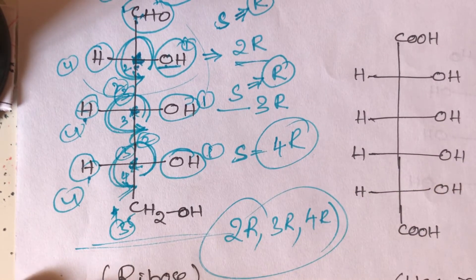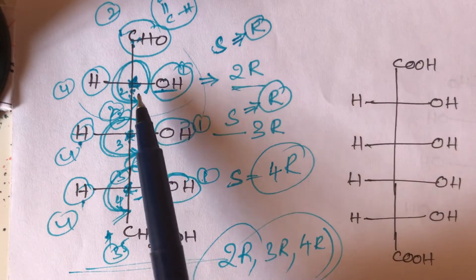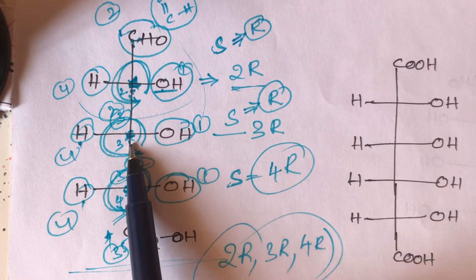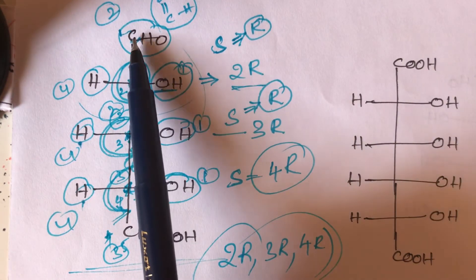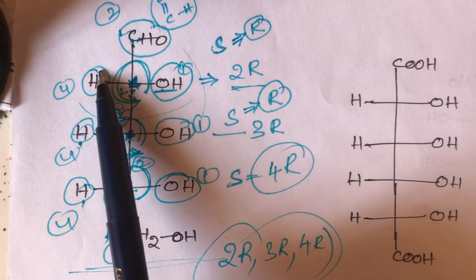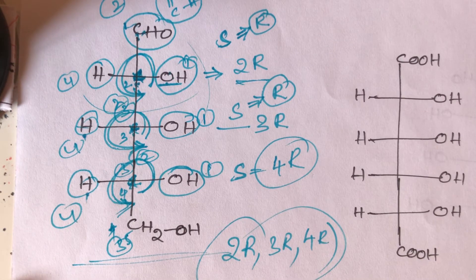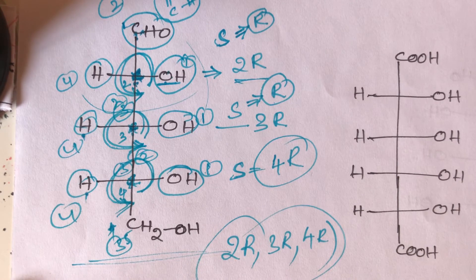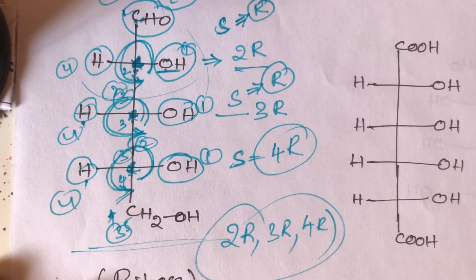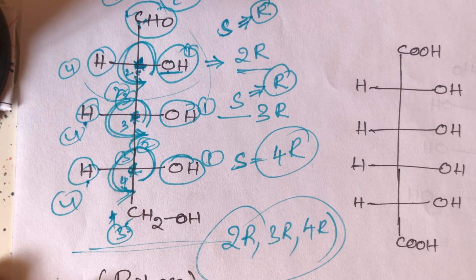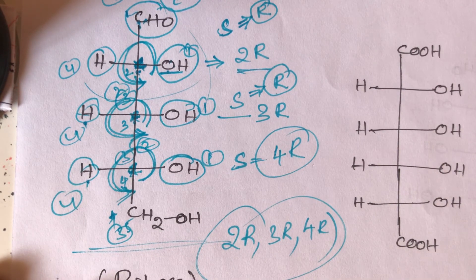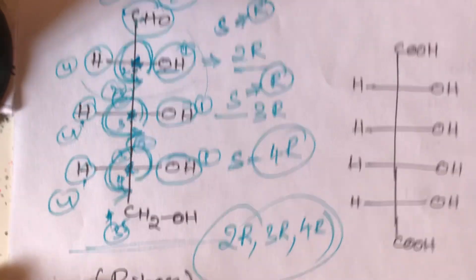Here is a simple trick: for each chiral carbon directly attached to oxygen, the top carbon having a double bond gets higher priority than the single-bonded bottom carbon. The key rule is: if the least priority group is on the horizontal line, R becomes S and S becomes R. If the least priority group is on the vertical line, R remains R and S remains S always. This is the simple trick to find R/S configuration easily.